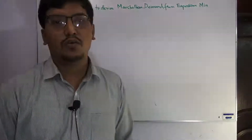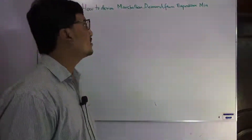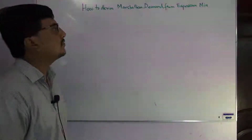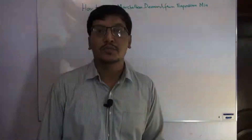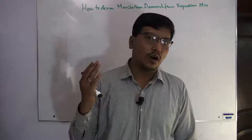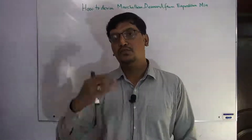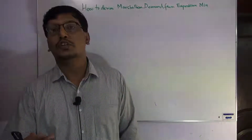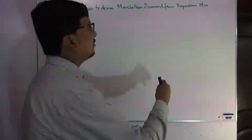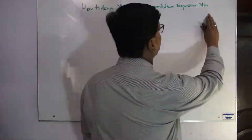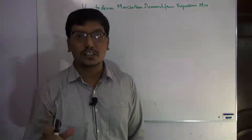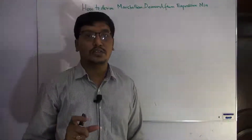Hello, Assalamu Alaikum. Now we are going to discuss how to derive the Marshallian demand function from the expenditure minimization. In the previous lecture we discussed how we can get the Hicksian demand function from the problem of utility maximization. Now the problem we are going to solve is different.